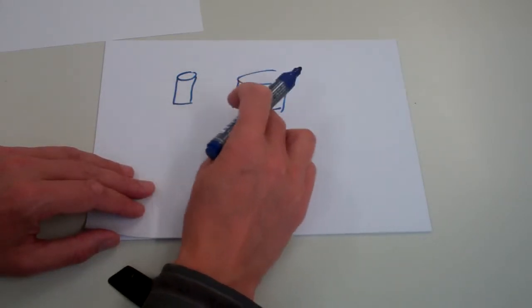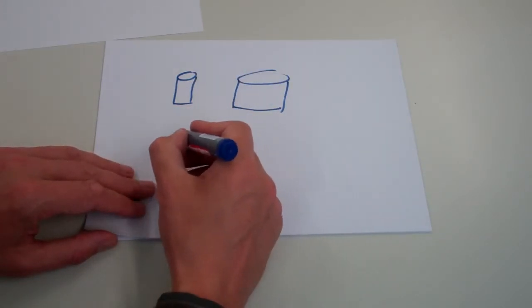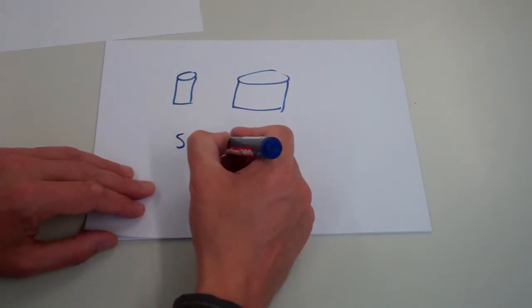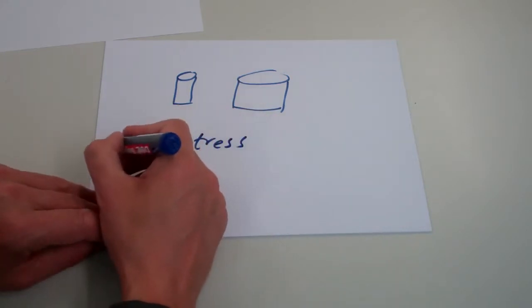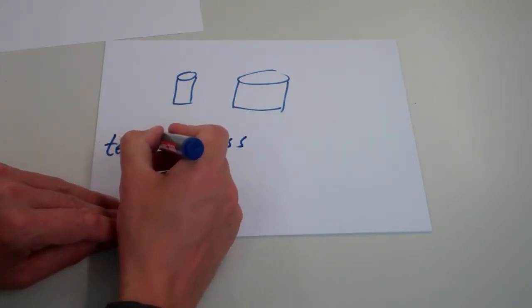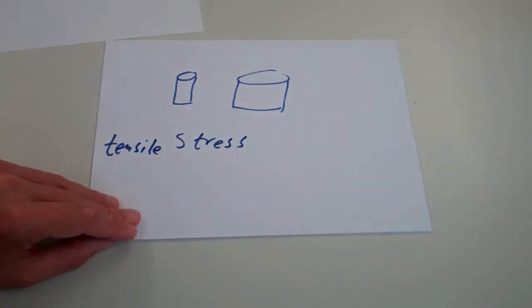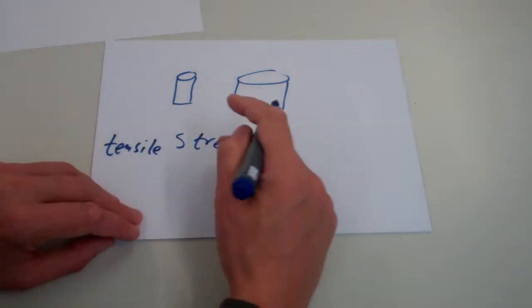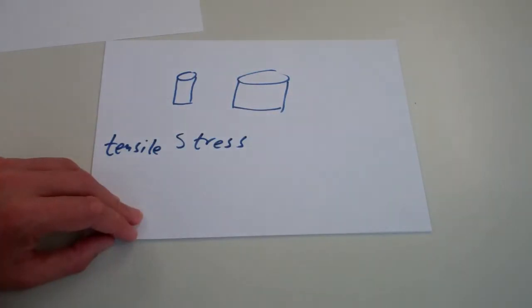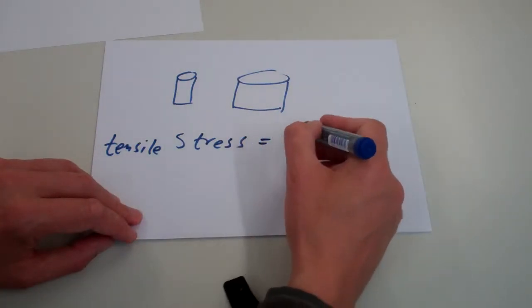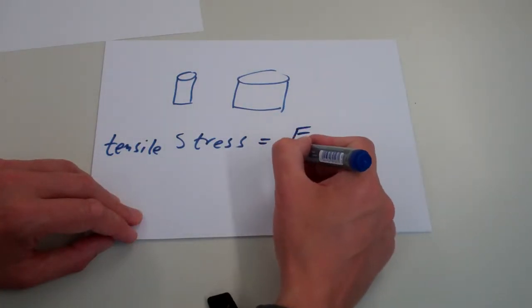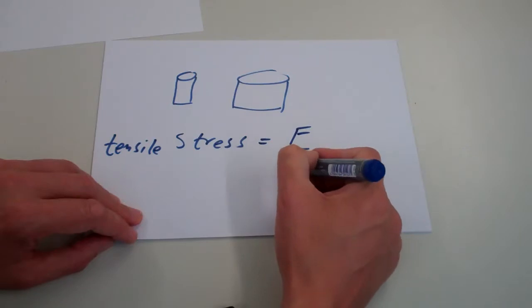But if they're made of the same material, they must have some property in common, and that's called the stress or the tensile stress, tensile being associated with the word tension. The tensile stress that they fail at should be the same. So tensile stress is a useful quantity for comparing the same material in different shapes.